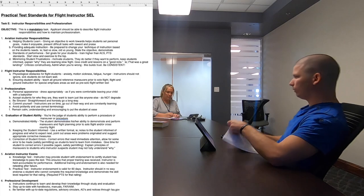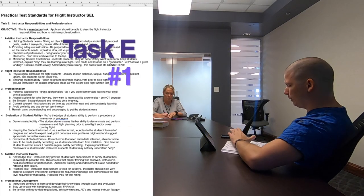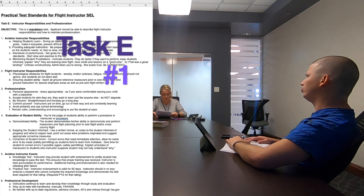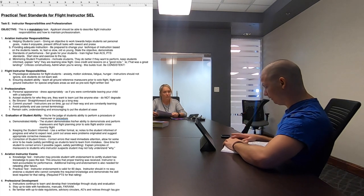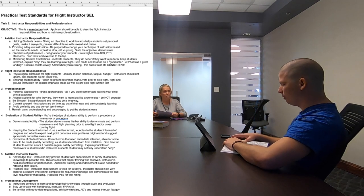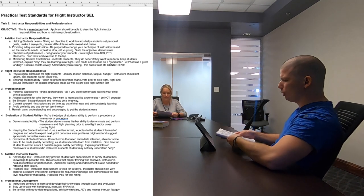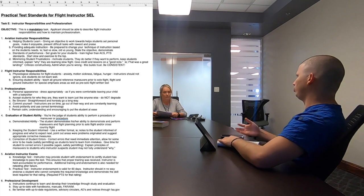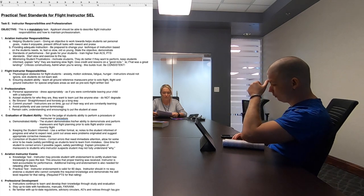Now Task E — instructor responsibilities and professionalism — is the mandatory one you cover no matter what. It divides into ground instructor and flight instructor, but they overlap a lot so I covered what didn't overlap. Helping a student learn is your core job, but it's not all on the instructor — the student has to want to learn. You cannot force a student to learn.